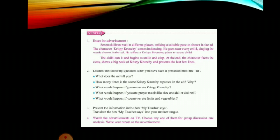Question 4: What would happen if you ate proper meals like rice and dal or dal roti? You would remain healthy. Growing children need a balanced and nourishing diet — balanced diet means all elements in proper proportion: rice, dal, curry, vegetables. Nourishing food provides proper nutrients for your body and growth.